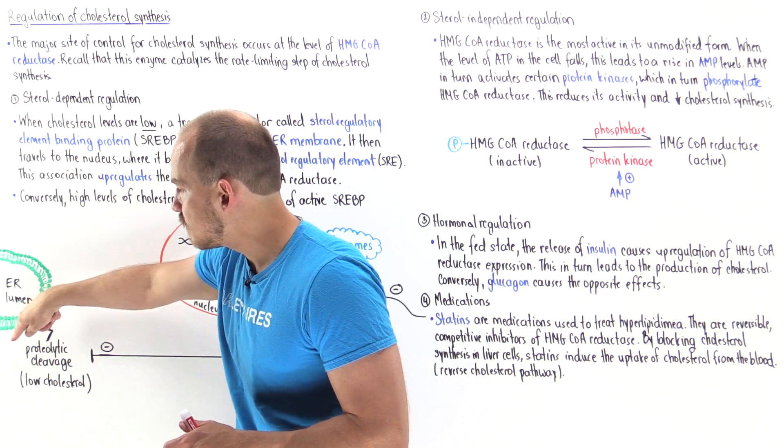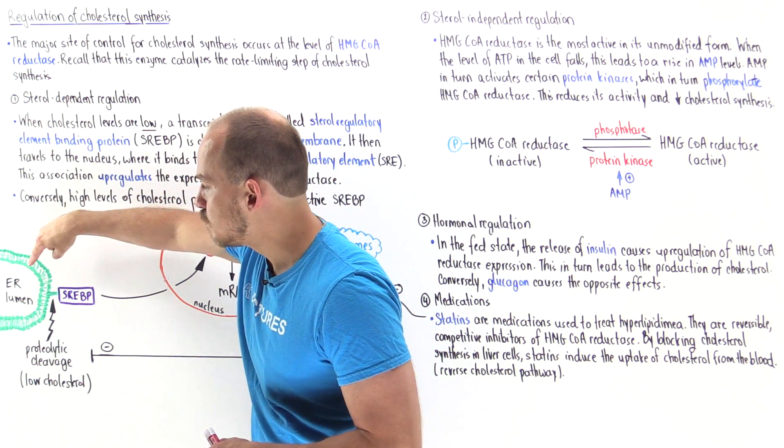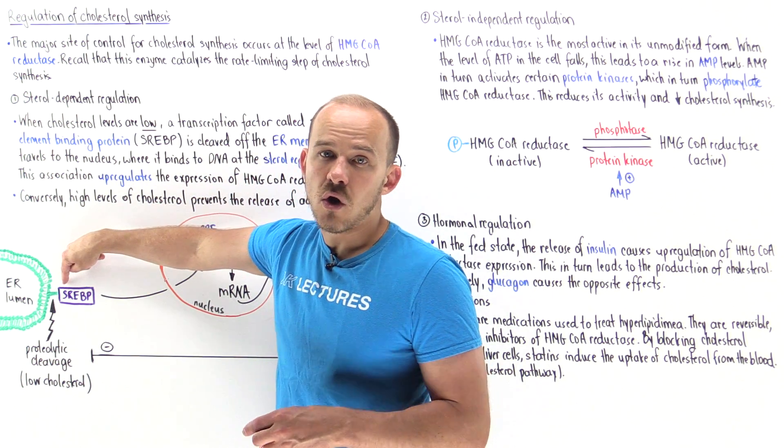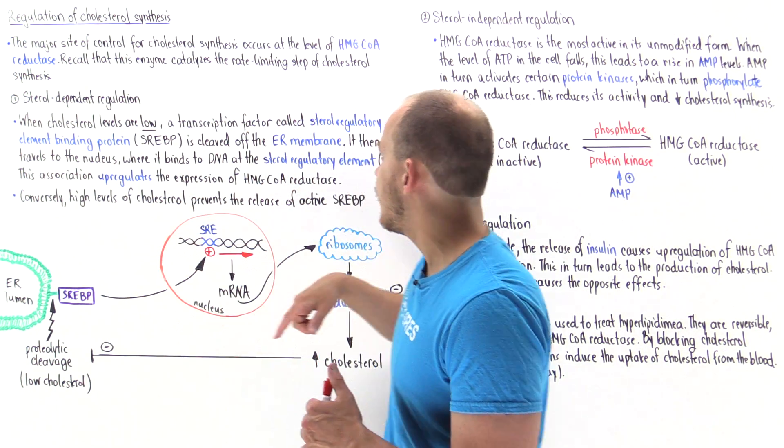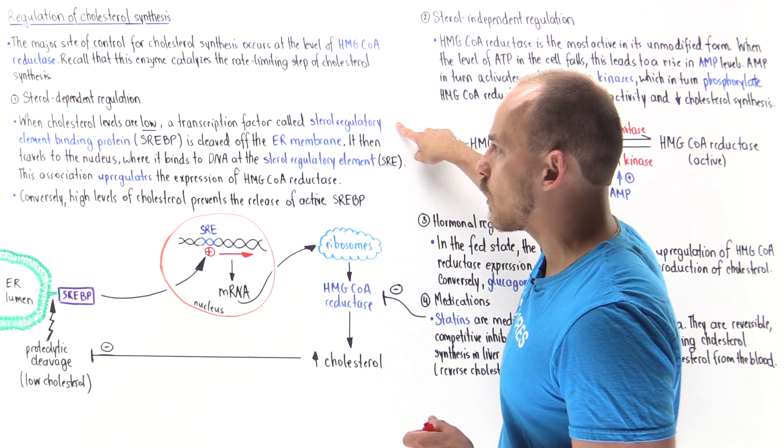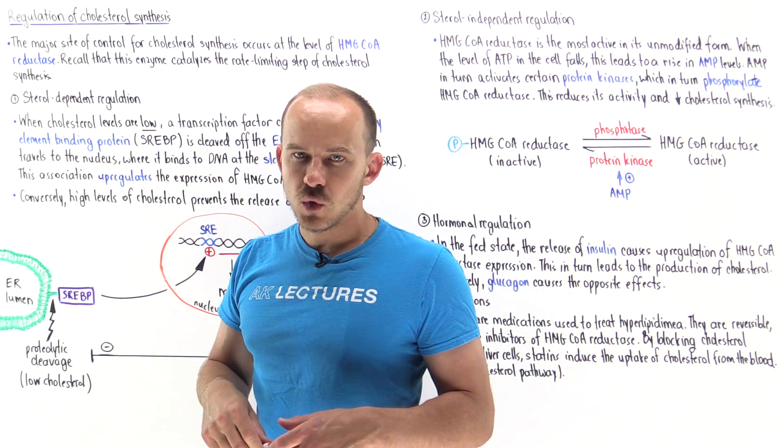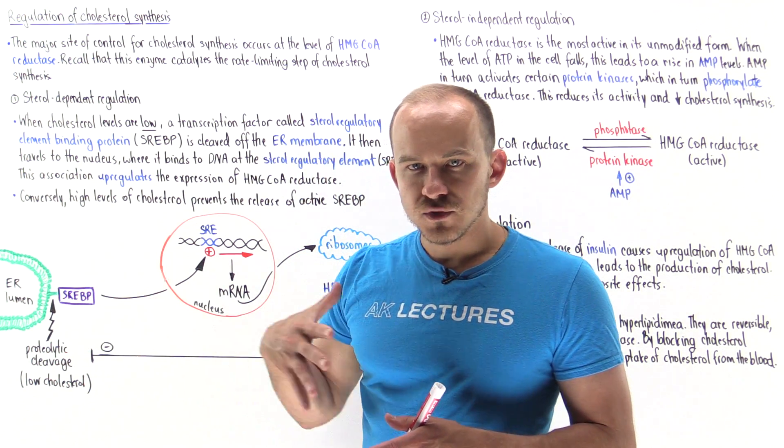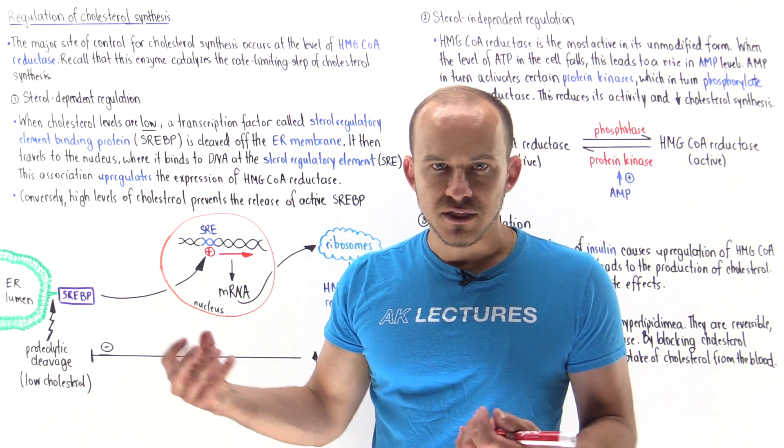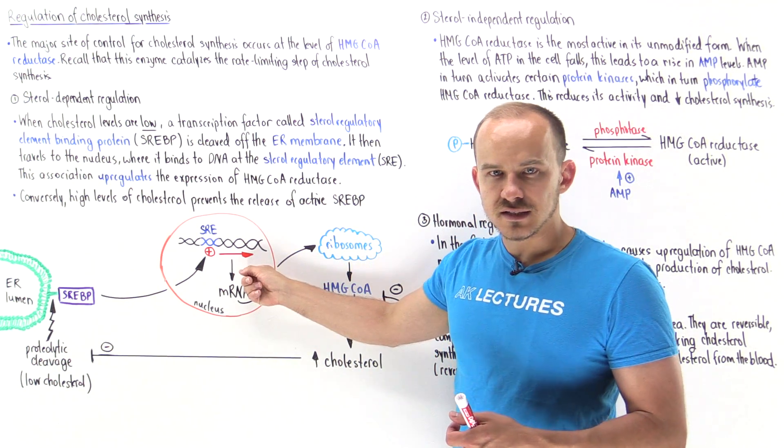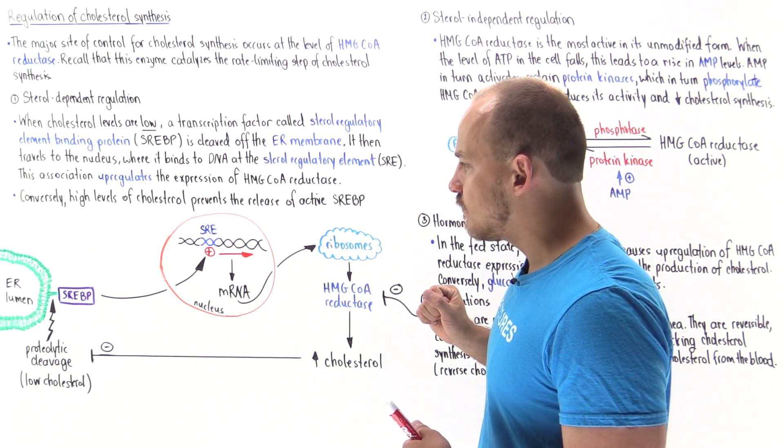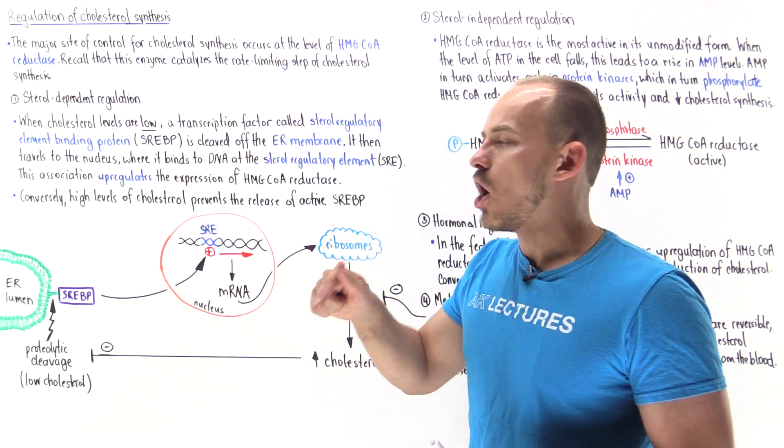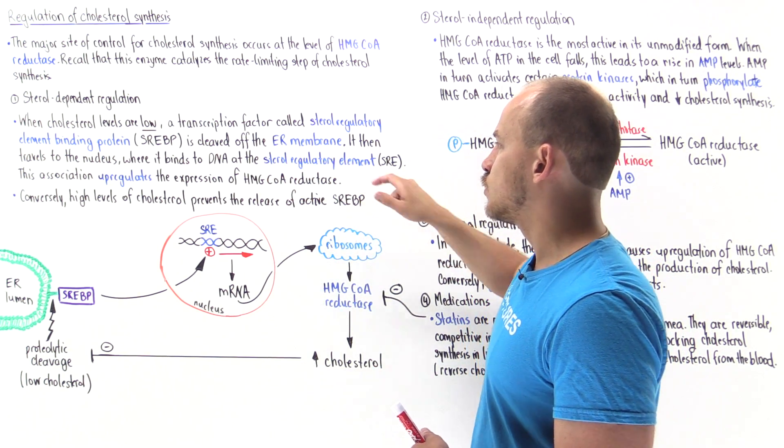This is the membrane of the endoplasmic reticulum. Attached to this membrane on the cytosolic side is a protein called SREBP which stands for sterol regulatory element binding protein. When this transcription factor comes off it becomes activated and then quickly moves into the nucleus of the cell. In the nucleus it binds onto a section of the DNA known as SRE, sterol regulatory element.